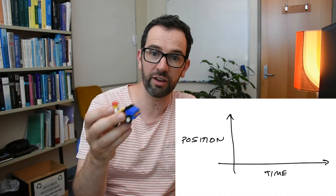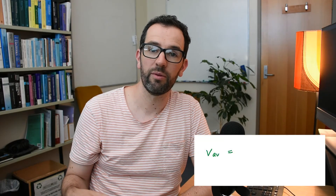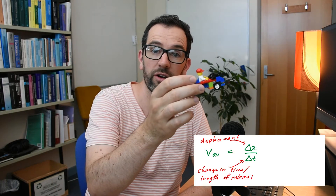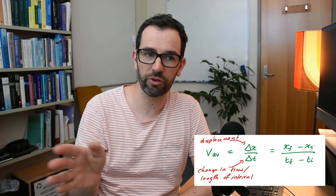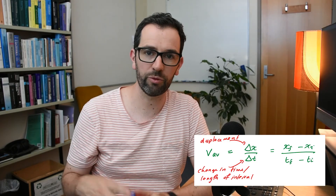Last time we started looking at displacement as the beginning of our study of kinematics. Displacement is the idea that given an object, we can record its position using numbers, especially in one spatial dimension. The displacement is the difference between our ending position and our starting position. We looked at position time graphs and started looking at average velocity, which is displacement over an interval of time — corresponding to our everyday idea of speed.